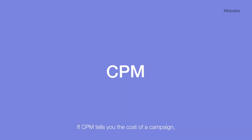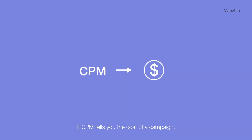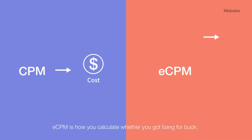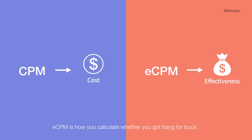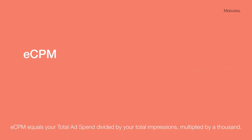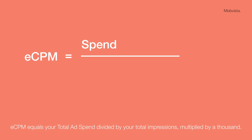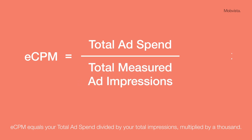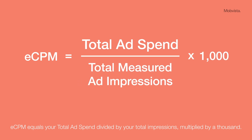If CPM tells you the cost of a campaign, eCPM is how you calculate whether you got bang for your buck. eCPM equals your total ad spend divided by your total impressions, multiplied by a thousand.